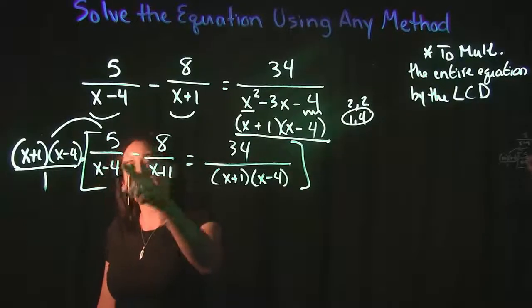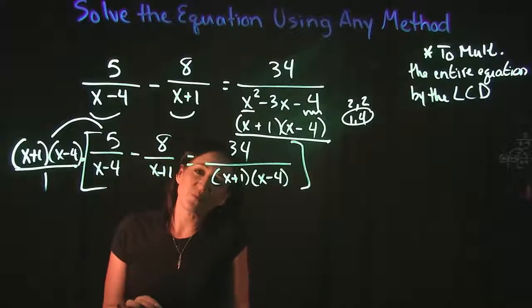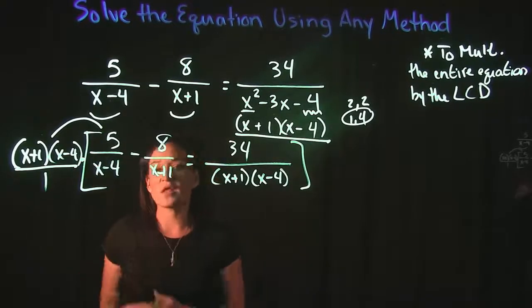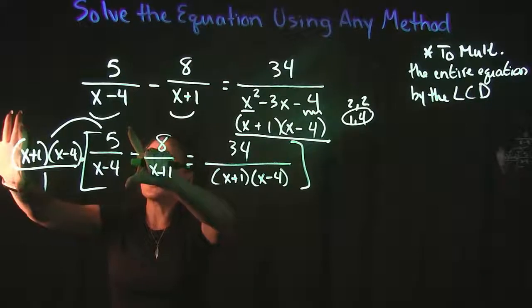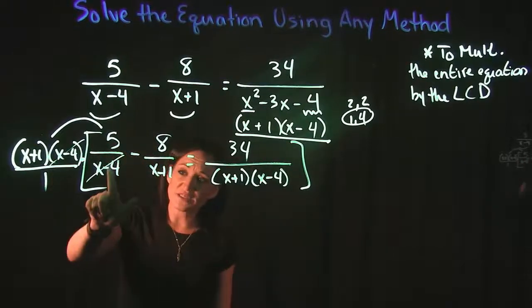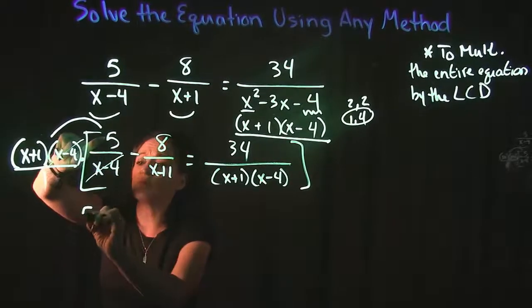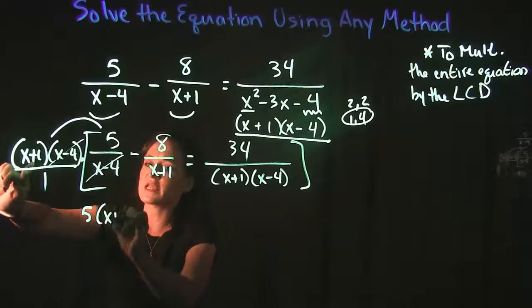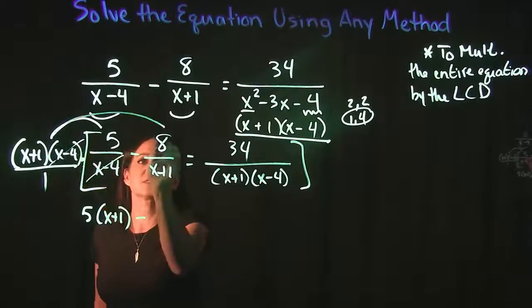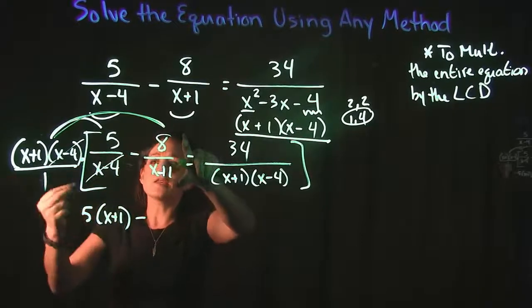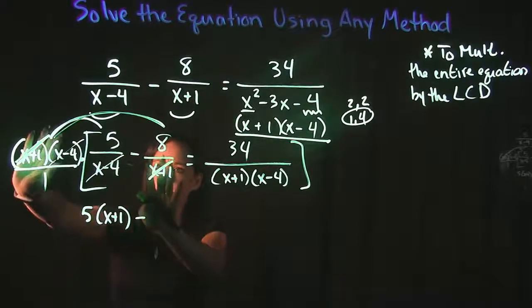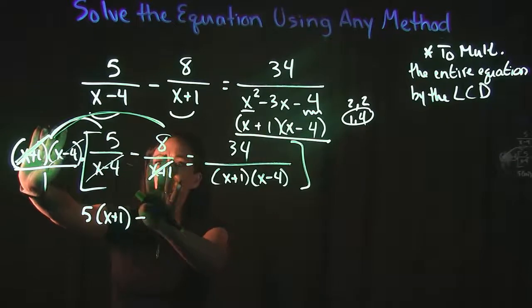Also remember a very important rule that says if you have the same thing in the numerator as you have in your denominator, they cancel out. So when I'm doing this multiplication, this x minus 4 here can cancel with this x minus 4 here, leaving me with 5 times this x plus 1. Minus our next multiplication is this times this right over here. And in this instance, x plus 1 will cancel with this x plus 1 here, leaving me with the 8 times x minus 4 is equal to 34.